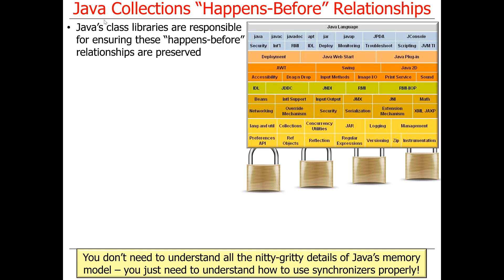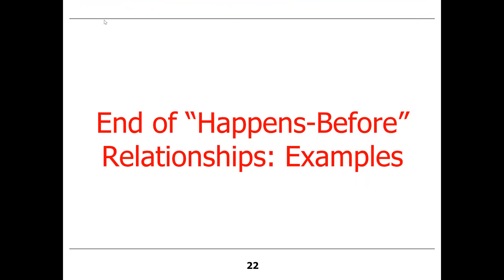Java class libraries such as ConcurrentHashMap or Thread are responsible for ensuring that all these happens-before relationships are enforced properly. The good news is you don't actually have to understand all the nitty-gritty details of Java's memory model to make this work — you just have to understand how to use various Java synchronizers properly. I'm just providing you with a little conceptual understanding of what those synchronizers are doing under the hood. That wraps up our discussion about happens-before relationships.